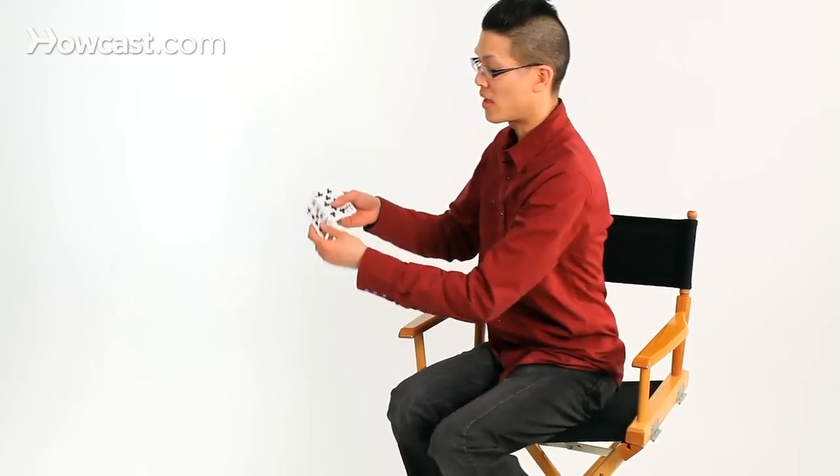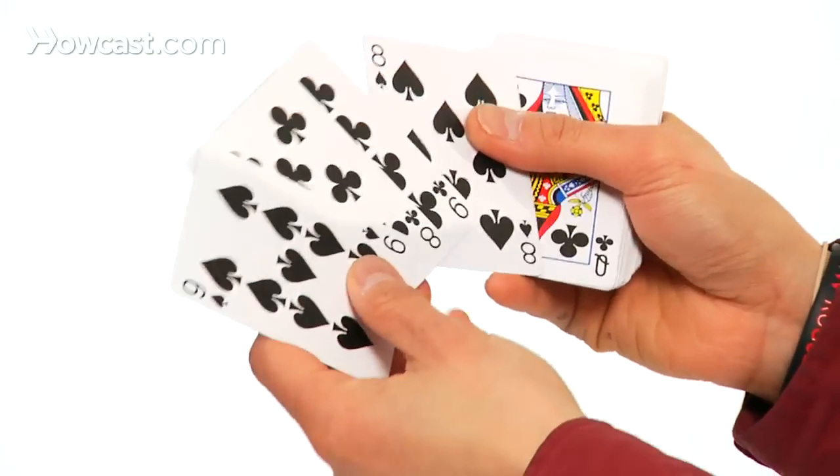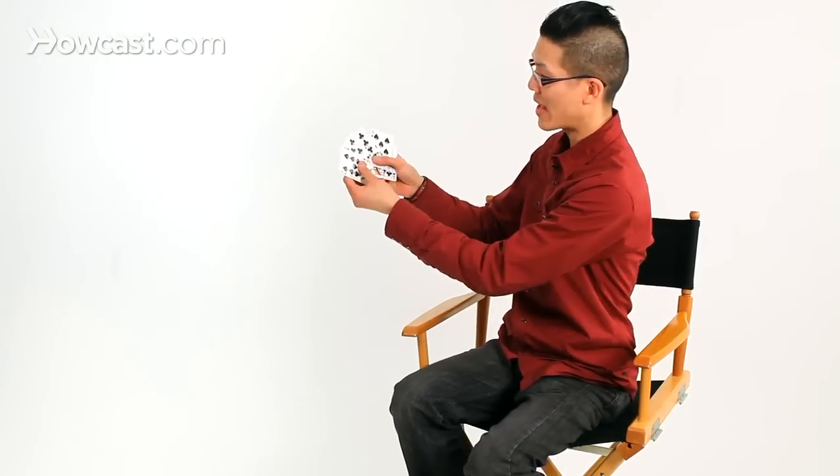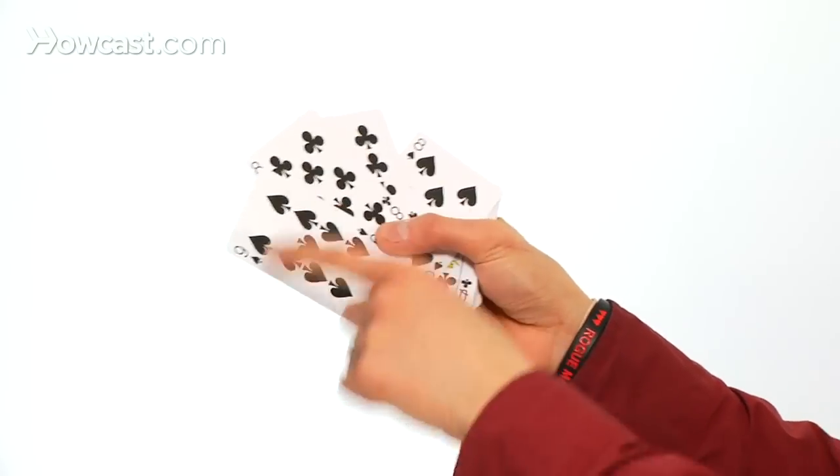For this trick, you're going to need the nine of spades, eight of clubs, the nine of clubs, and the eight of spades. And the secret behind this trick is that you never really tell them which nine and which eight it is.